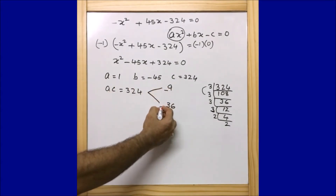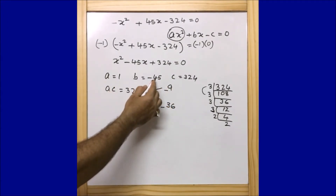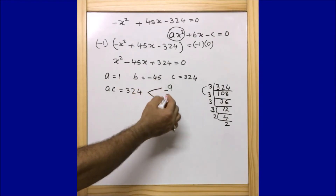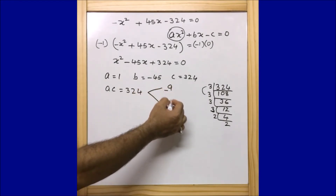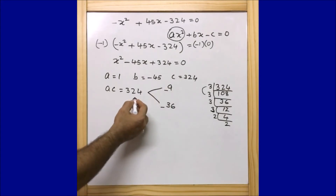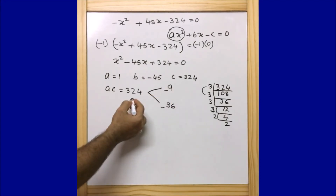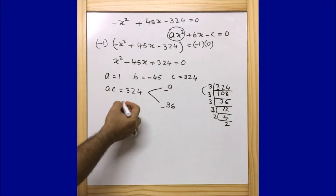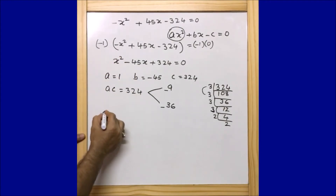Taking minus 9 and minus 36: adding them gives minus 45, and multiplying them gives positive 324. These are our two numbers.